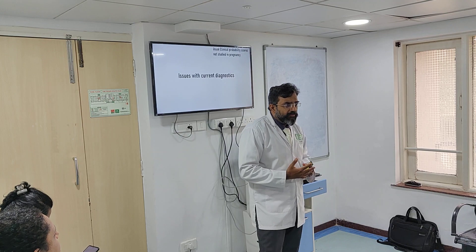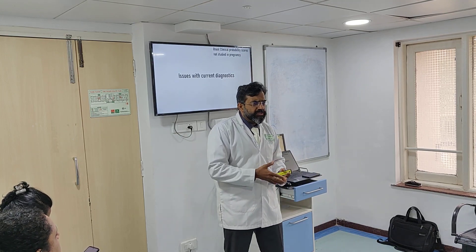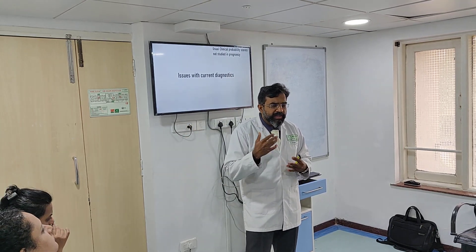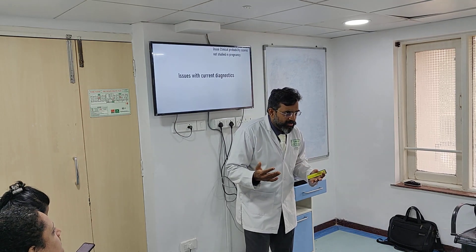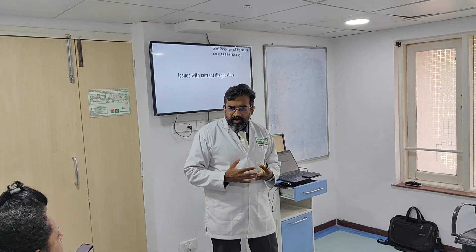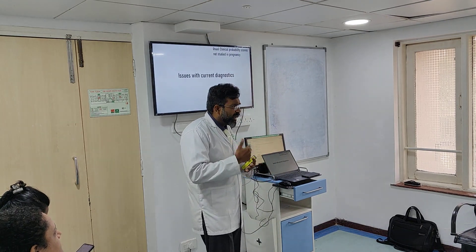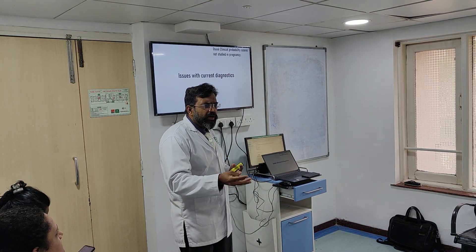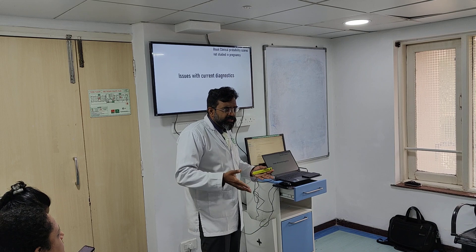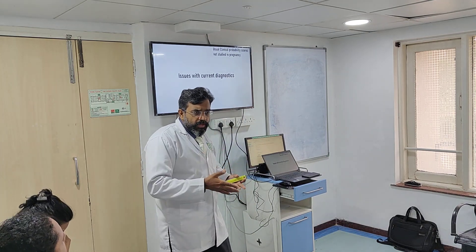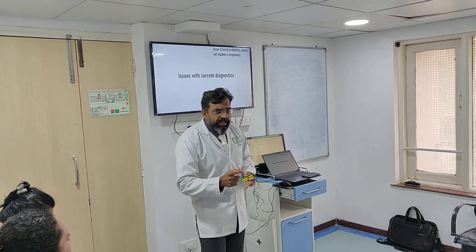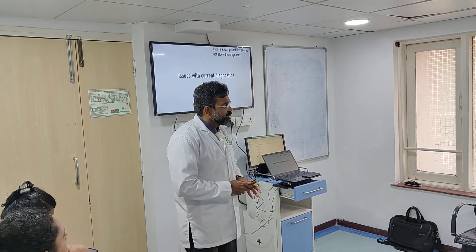In pulmonary embolism: we do a Wells score, divide patients into PE likely or PE unlikely based on features like heart rate, previous DVT, cancer, active malignancy, recent surgery. If the score is less than 4, we do a D-dimer — if negative, no pulmonary embolism and the patient goes home. If more than 4, we investigate for pulmonary embolism. The problem is we cannot use these clinical probability scores in pregnancy at all.